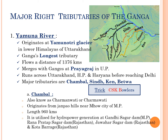The cities of Bagpat, Delhi, Noida, Mathura, Agra, Firozabad, Amirpur, and Allahabad lie on its banks. The major tributaries of Yamuna river are Chambal, Sindh, Ken, and Betwa rivers. The trick to remember these 4 tributaries is 'CSK Boulas' — C as Chambal, S as Sindh, K as Ken, and B in Boulas as Betwa.